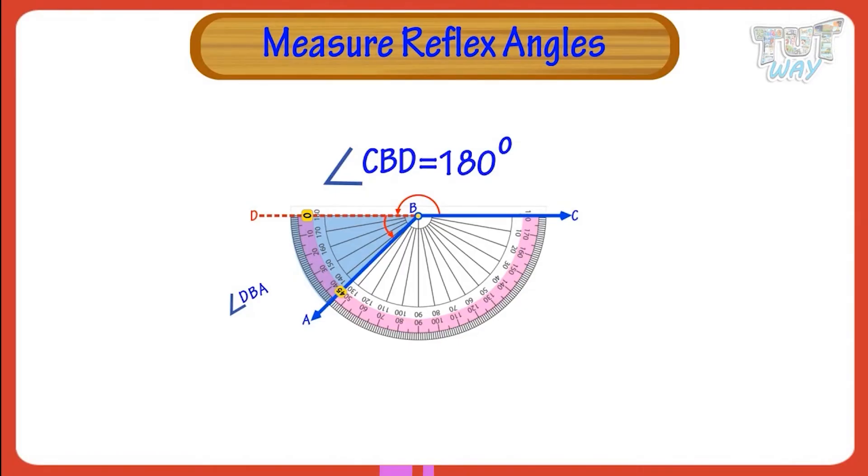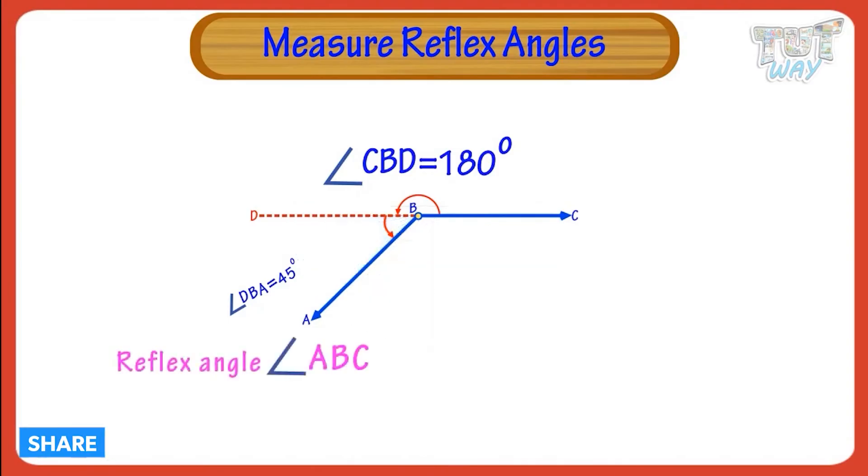So the size of angle DBA is 45 degrees. We write it like this to measure the reflex angle ABC.